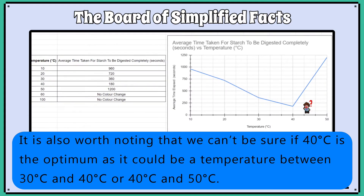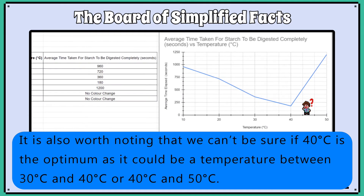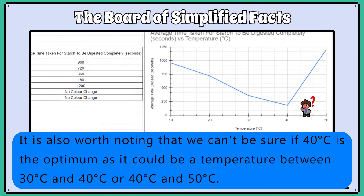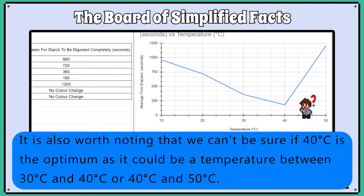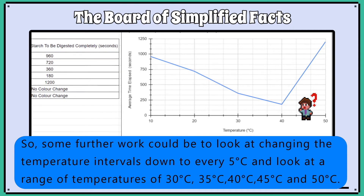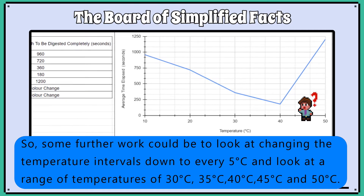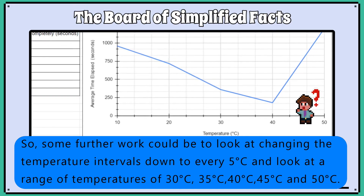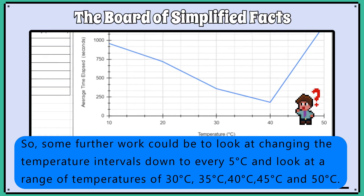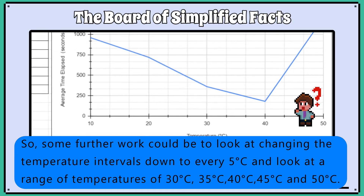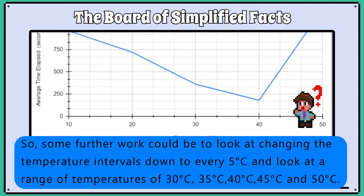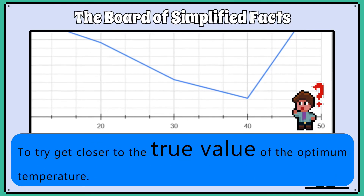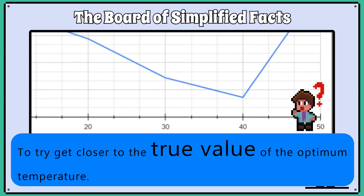It is also worth noting that we can't be sure if 40 degrees Celsius is the optimum, as it could be a temperature between 30 and 40, or 40 and 50 degrees Celsius. So some further work we could do would be to look at changing the temperature intervals down to every 5 degrees, looking at a range of temperatures of 30, 35, 40, 45, and 50 degrees Celsius, to try to get closer to the true value of the optimum temperature.